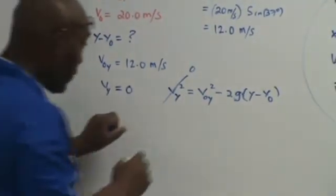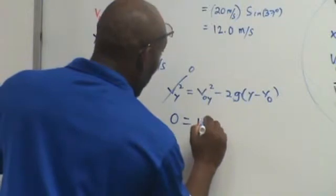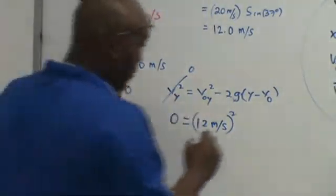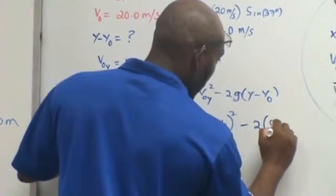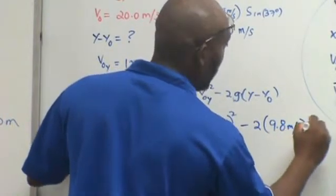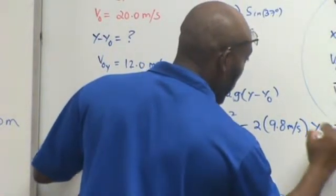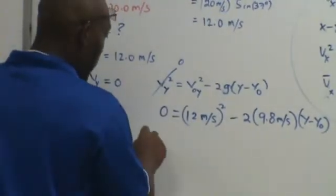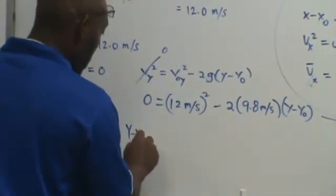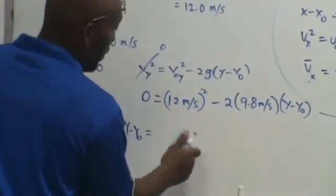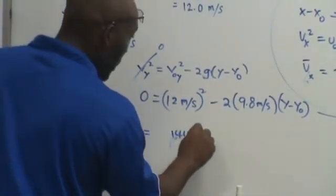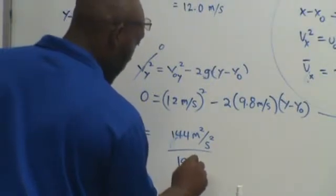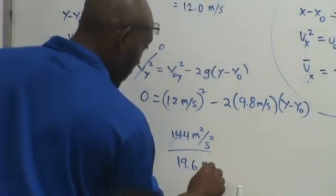We just found this, which is 12. So zero equals 12 meters per second. You've got to square everything, right? Minus 2, 9.8 meters per second. Y minus Y0, which is what we're trying to find. And based upon my algebra, this is going to end up being Y minus Y0 equals 12 squared, 144 meter squared, divided by 19.6 meters per second squared.